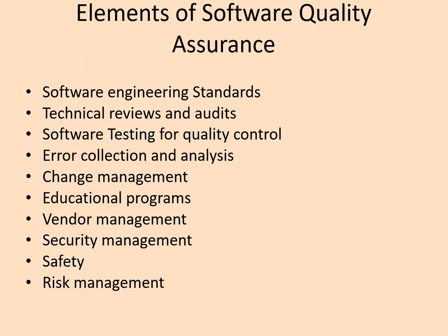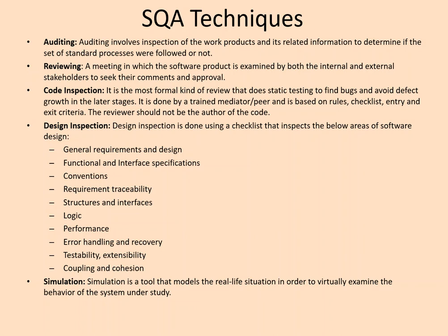The elements of Software Quality Assurance include: software engineering standards, review standards, software testing for quality control, error collection and analysis so issues can be avoided in the future, change management, educational programs, vendor management, security management, safety, and risk management.